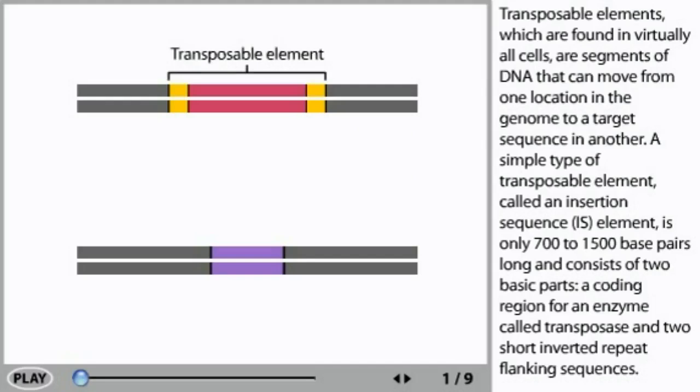Transposable elements, which are found in virtually all cells, are segments of DNA that can move from one location in the genome to a target sequence in another. A simple type of transposable element called an insertion sequence or IS element is only 700 to 1500 base pairs long and consists of two basic parts.